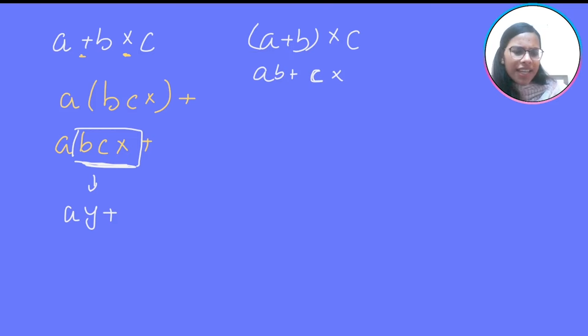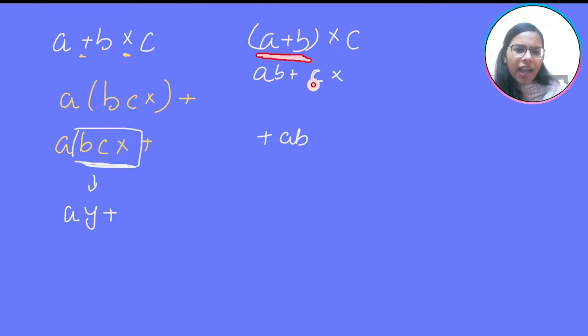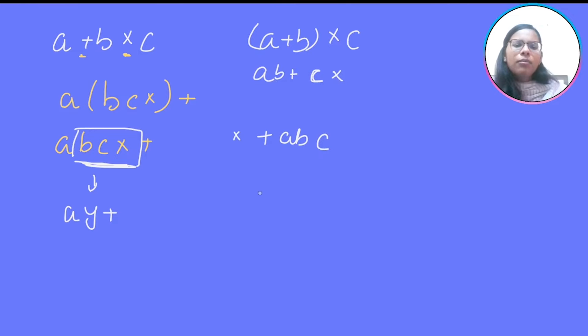Talking about prefix expression — if I do a prefix expression of (a + b) * c, I will get plus a, b for the addition part and then a c with a multiplication sign — so the prefix would be multiply, plus, a, b, c. Whenever we have higher precedence, we give it priority.